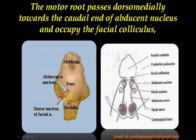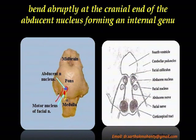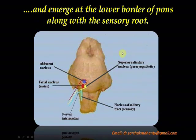To reiterate with the visual: the motor nucleus gives rise to the motor root which passes dorsomedially towards the caudal end of the abducens nucleus, occupying the facial colliculus in the fourth ventricle. The motor root then bends abruptly at the cranial end of the abducens nucleus forming an internal genu, and emerges at the lower border of the pons along with the sensory root.